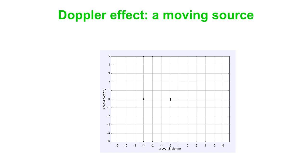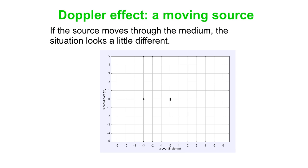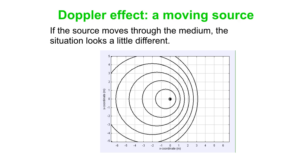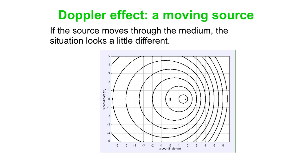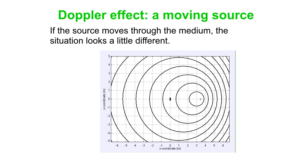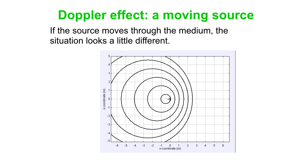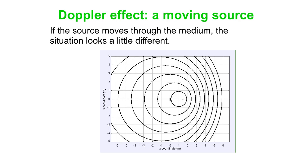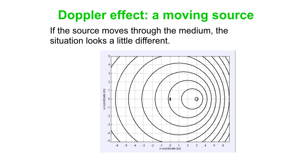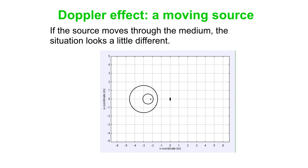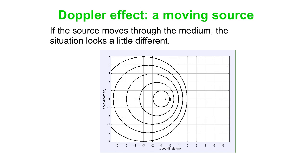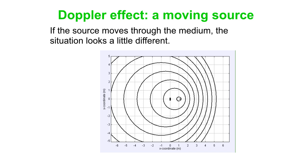Okay, so let's move on to a moving source. And the situation definitely looks a little bit different now. For one thing, the pattern is very asymmetric. And again, that's because the source is moving. And of course, the center of each wave is where the source was when it let that wave go. And if the source moves, then all the centers are at different places. Unlike the other case where the source was at rest. It was a very symmetric pattern.